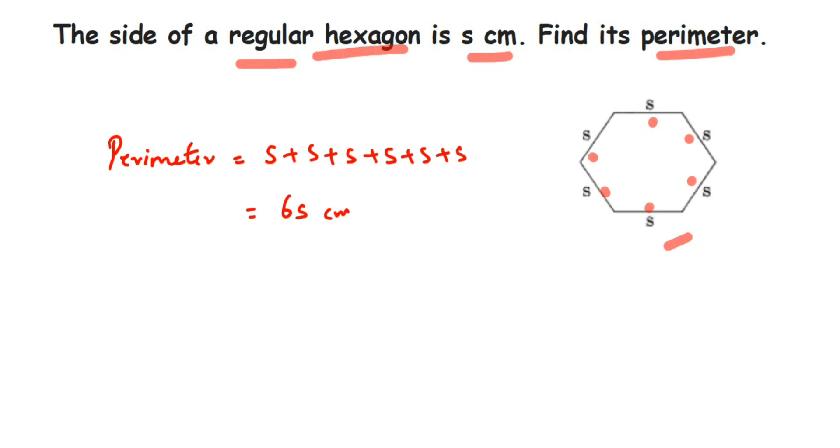This is only possible if it's a regular hexagon. If it was a normal hexagon, all the sides would not be of the same length, so we couldn't simplify it to 6s.